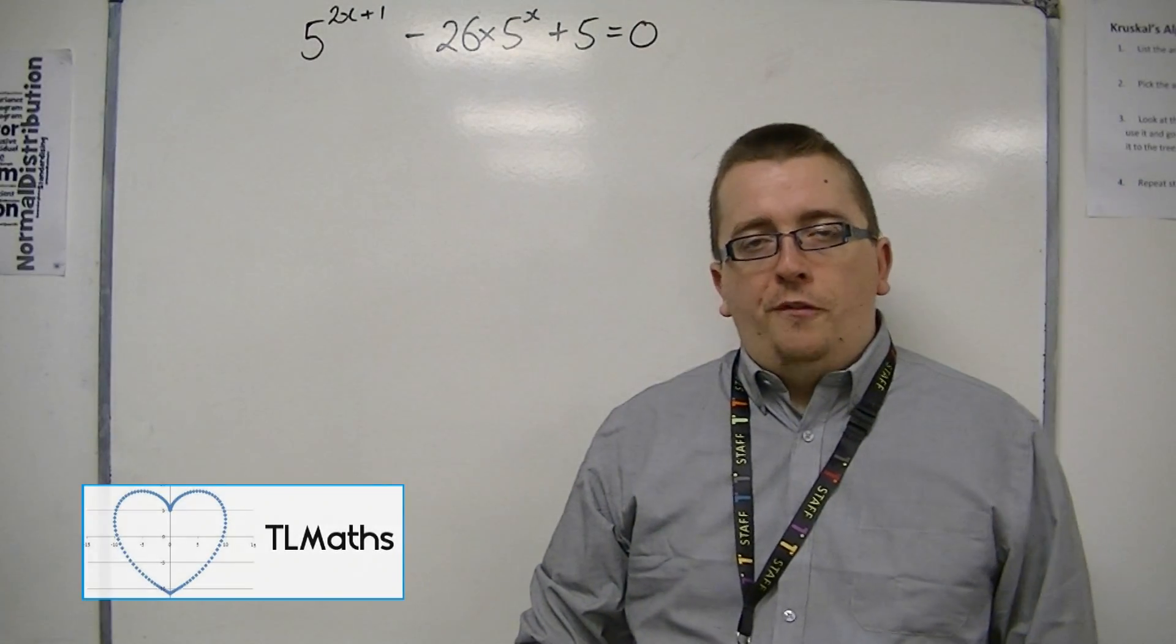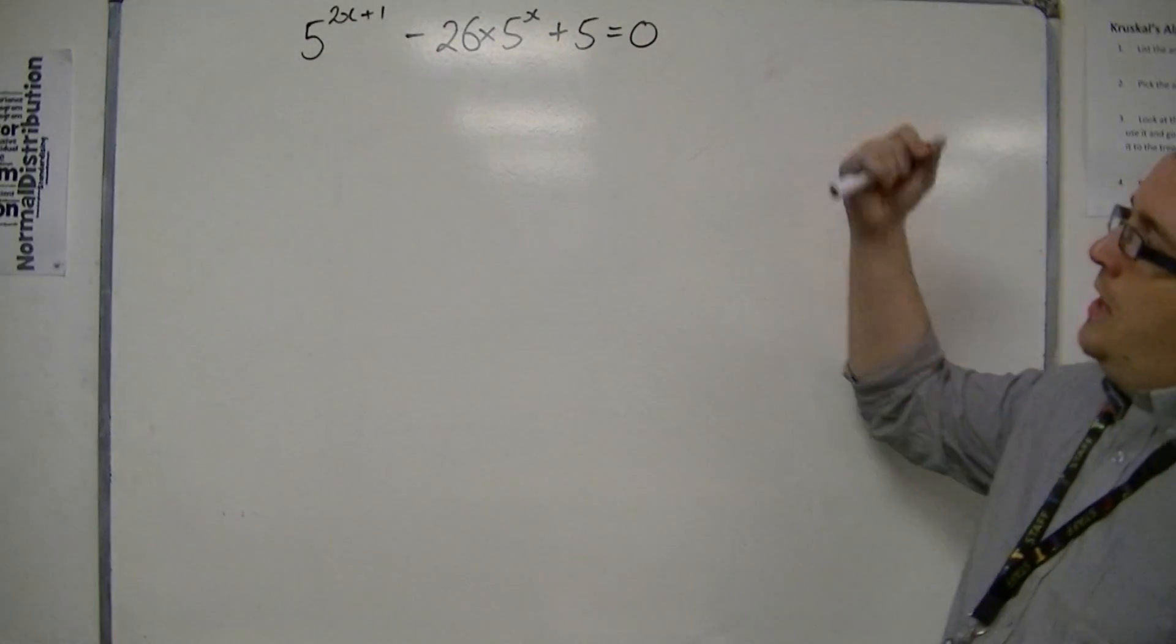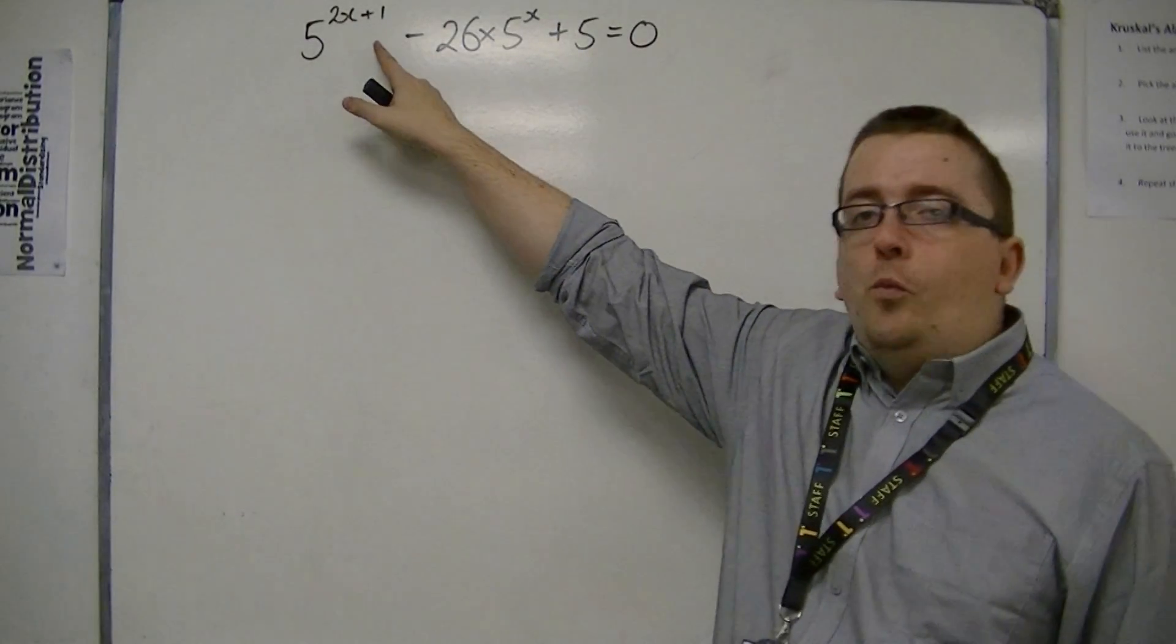In this third example of a hidden quadratic, we've got something that looks a little bit more complicated, because we've got this 5 to the 2x plus 1 in this case.